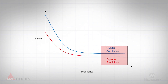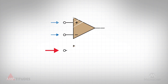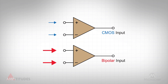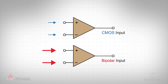At higher frequencies, CMOS still has a higher white noise due to a lower transconductance when compared to similarly sized bipolar transistors. Finally, in a previous Amptitudes episode, we explored bias and offset currents and why they are important. CMOS amplifiers have substantially lower bias currents relative to bipolar input stages, which can be orders of magnitude worse.